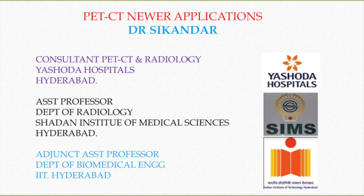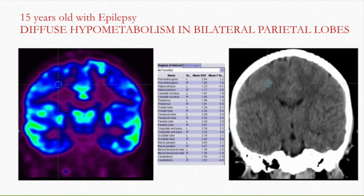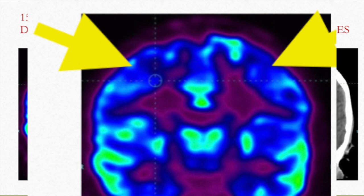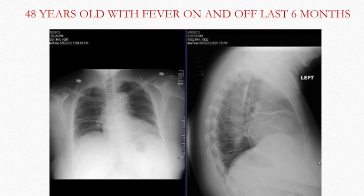I will now be showing newer applications of PET-CT. This is a 15-year-old with epilepsy. The PET was advised and it shows diffuse hypometabolism in bilateral parietal lobes, especially in the cortical and subcortical deep white matter, giving the indication of an epileptogenic focus.